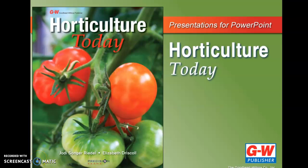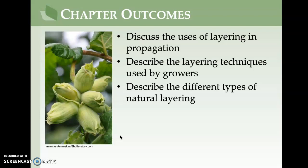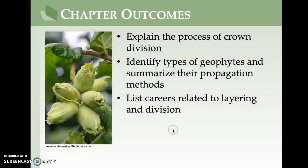This is Chapter 15: Layering and Division. The learning targets or chapter outcomes are: discuss the uses of layering and propagation, describe the layering techniques used by growers, describe the different types of natural layering, explain the process of crown division, identify types of geophytes and summarize their propagation methods, and list careers related to layering and division.